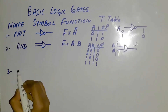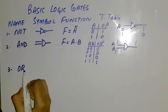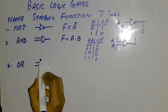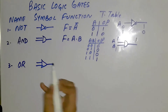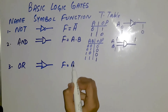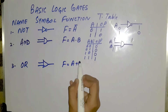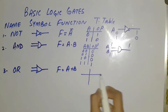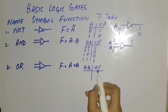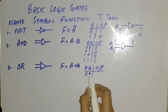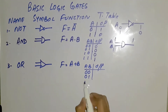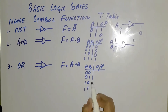Third, we have the OR gate. It is represented by this symbol and is actually the addition of a and b. Its truth table inputs are 0-0, 0-1, 1-0, and 1-1.